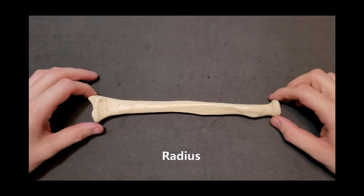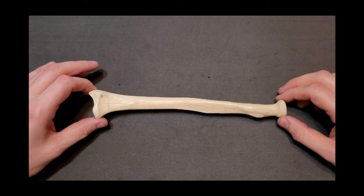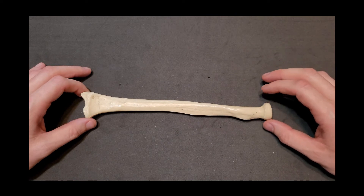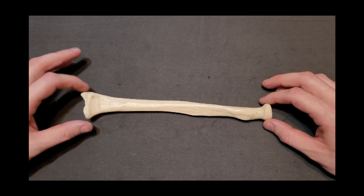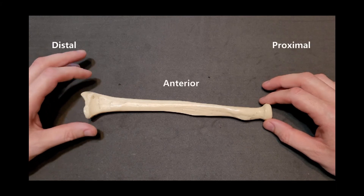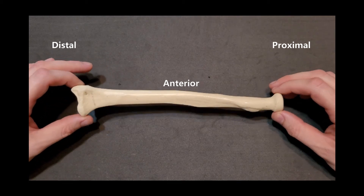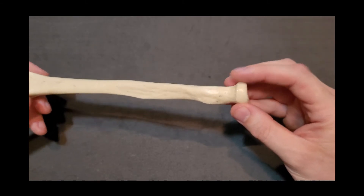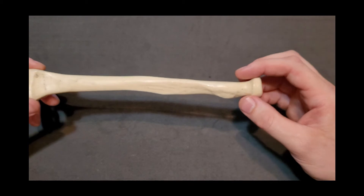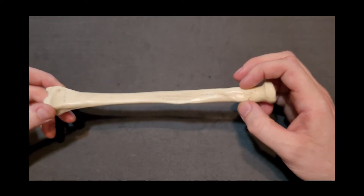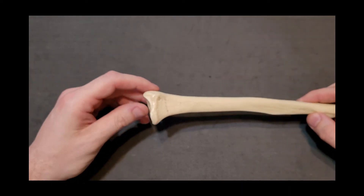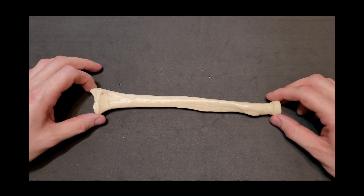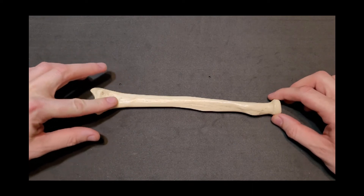Moving on to the radius: currently viewing the anterior surface of a right radius. The head is proximal — the rounded end I'm tapping — and the distal end has a styloid process and a slightly wider, almost triangular shape. Looking closely we can see the roundness of the head, the concave fovea for the capitulum, and the bicipital tuberosity bump, then the styloid process at the distal end articulating with the carpal bones.